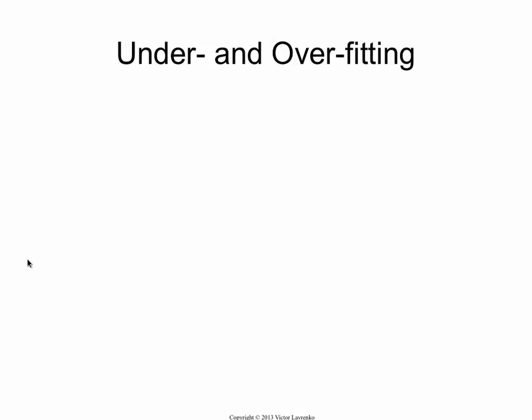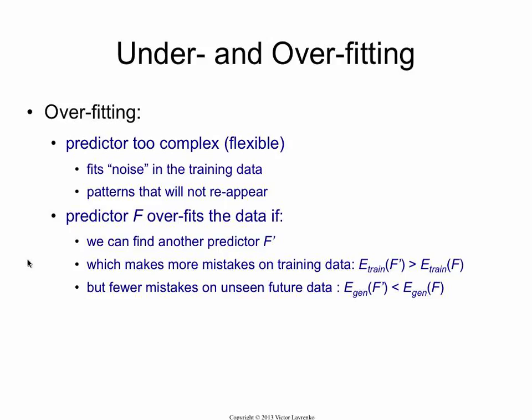More formally, this concept is known as overfitting. When you're building a predictor, you have a choice of algorithms you can apply. Some functions are more flexible than others — more complex, more powerful, they can fit more types of data. Other functions are more rigid. Overfitting happens when you pick a function that is too powerful, too complicated, and too flexible to predict what you're trying to predict. It's flexible enough that it fits the noise in the data in addition to the signal.